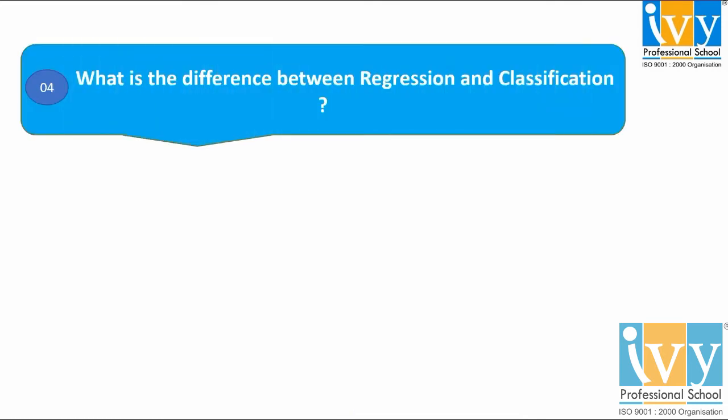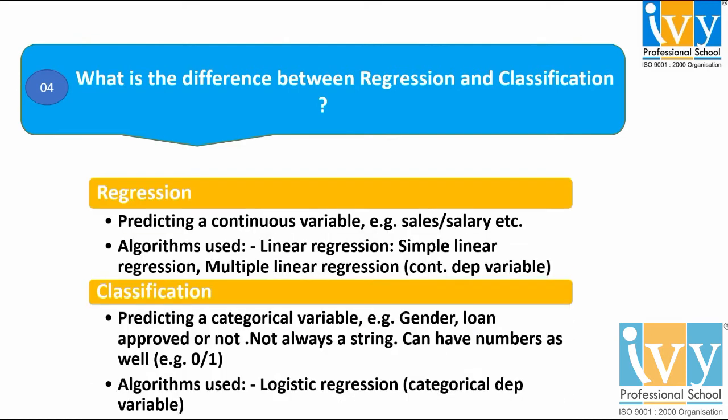The fourth question asks: what is the difference between regression and classification? Regression is used for predicting a continuous variable, such as sales or salary. The algorithms used include simple linear regression and multiple linear regression. Classification is used for predicting a categorical variable, like gender or whether a loan is approved or not.